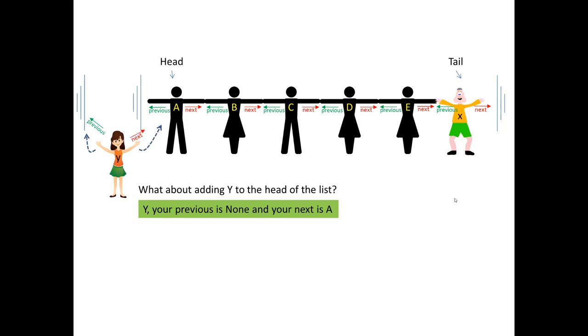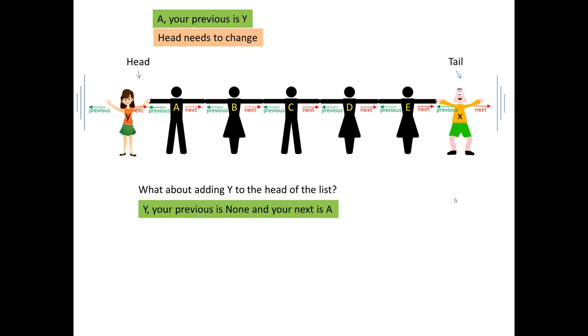Then I'll go to the head and I'll say, your previous is not none anymore. Your previous is actually Y. OK. And then I'll adjust that. And there you go. Y is added in the beginning, but I have to adjust the head. And now my head is this new node Y. And there you go. You have a doubly linked list where I added Y in the beginning and also X at the end.